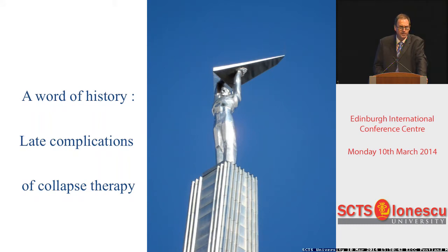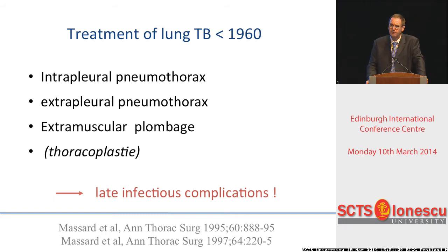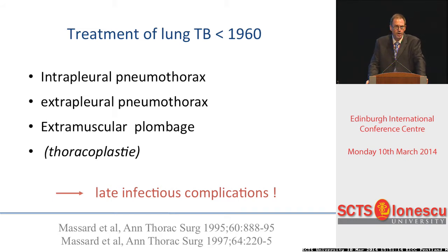Before I go into the substance, I wished to show some historic views we will probably never see again, and so maybe it will be of interest for the younger among us. This brings us back to dark ages, prior to 1960, which marked the advent of rifamycin for treatment of tuberculosis. In these former years, one of the ways to treat tuberculosis was to bring the lung down and in some way to asphyxiate the mycobacterium. The easiest way to do this was to create an intrapleural pneumothorax, which of course required reinjection every two weeks because air is resorbed.